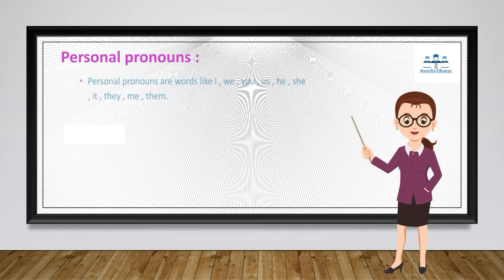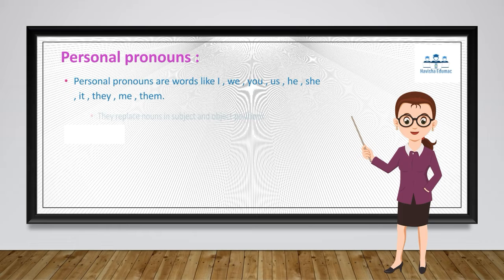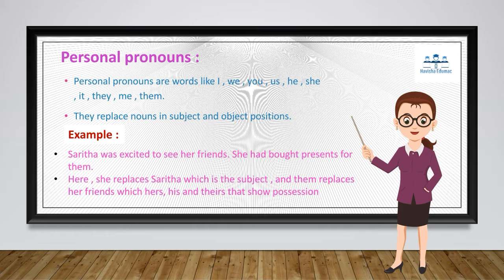Personal pronouns are words like I, we, you, us, he, she, it, they, me, and them. They are used for replacing nouns in subject and object positions. For example: 'Sarita was excited to see her friends. She had bought presents for them.' Here, 'she' replaces 'Sarita' which is the subject, and 'them' replaces 'her friends' which is the object.